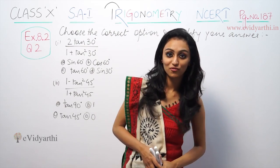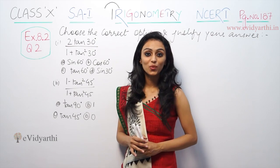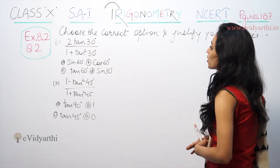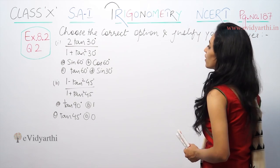Hi, this is Kushku with another question of trigonometry. This is question number 2, exercise 8.2 of NCERT, page number 187. Choose the correct option and justify your answer.